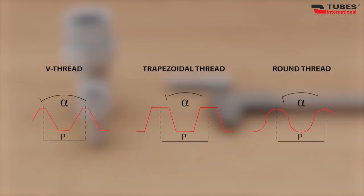There are three types of threads: V-threads, trapezoidal threads, and round threads. Their names refer to the profile of the edge in cross-section.